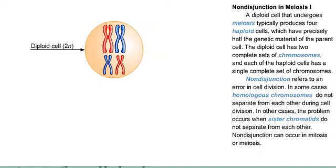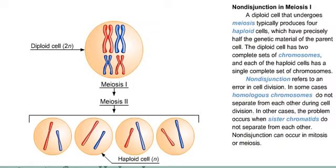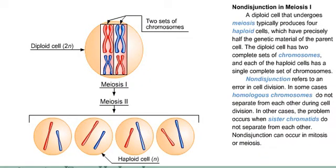A diploid cell that undergoes meiosis typically produces four haploid cells, which have precisely half the genetic material of the parent cell. The diploid cell has two complete sets of chromosomes, and each of the haploid cells has a single complete set of chromosomes.